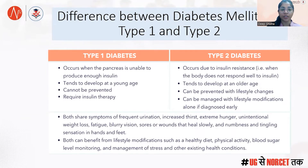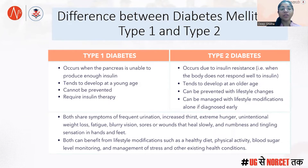As you can see, very beautifully depicted in this table: type 1 diabetes mellitus occurs when the pancreas is unable to produce enough insulin, whereas type 2 diabetes mellitus occurs due to insulin resistance — that is, when the body does not respond well to insulin. In type 1, the pancreas cannot develop insulin, but in type 2, insulin is present but the body cannot respond to it. Type 1 tends to develop at a young age whereas type 2 tends to develop at an older age.